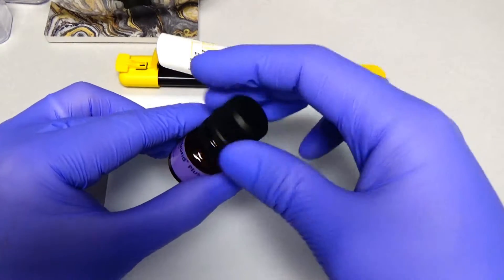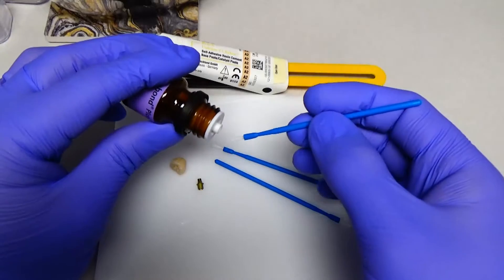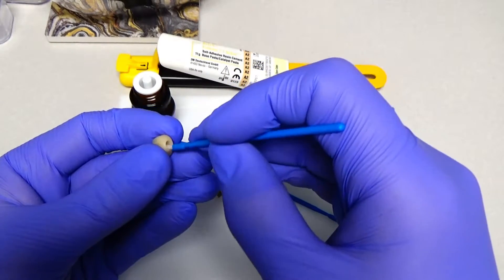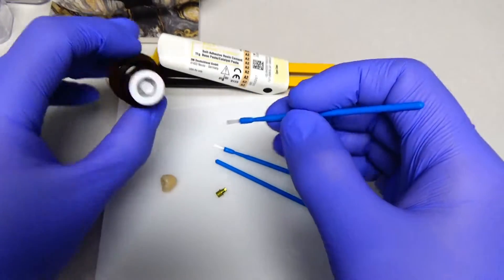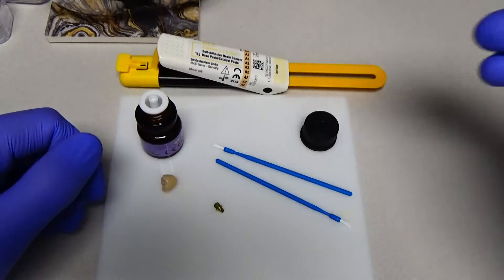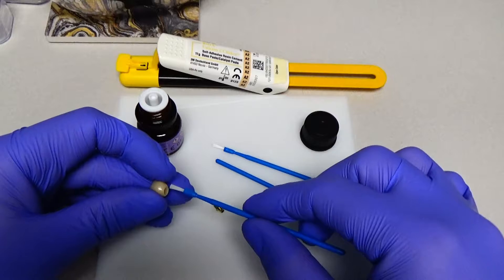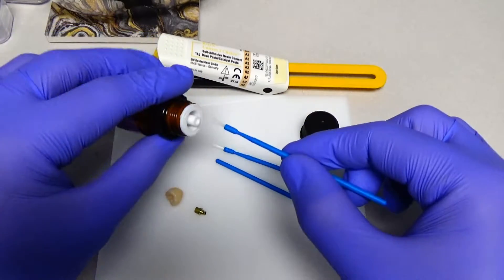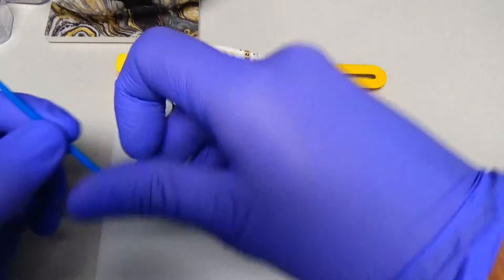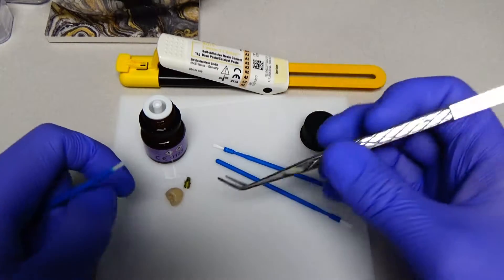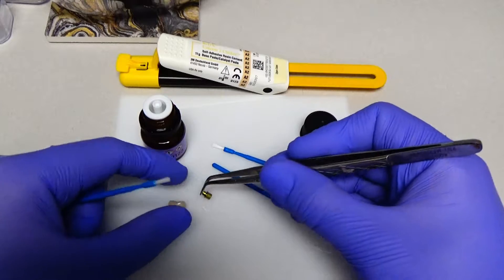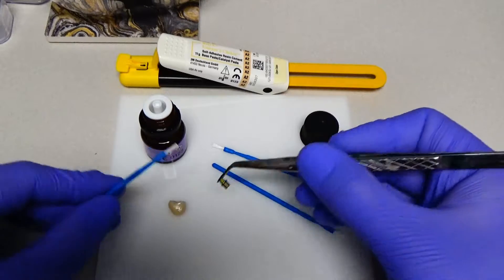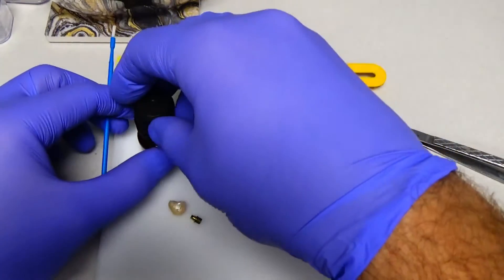So the first thing that we do is apply the Monobond. And the Monobond just needs to go on for 60 seconds to each surface there. And I'm wearing gloves because I don't want to contaminate as little as possible. So I was interrupted just for a moment there, but I just applied the Monobond Plus on the internal surface of the crown. And then now I'm going to apply a little bit more to the surface of the titanium insert here. And this just needs to sit and then we'll dry it off here in about 60 seconds.